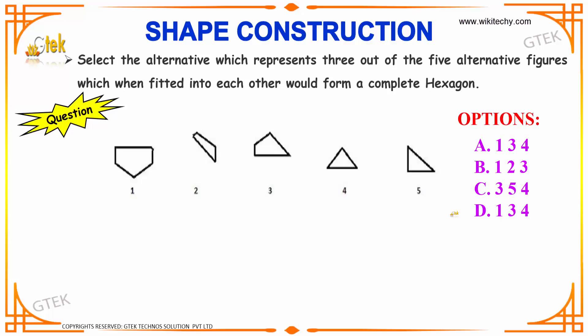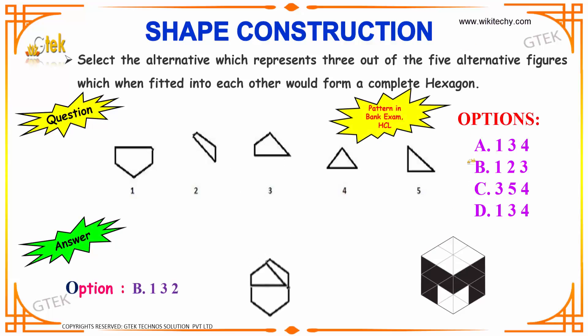Let us check out the answer. Option B: 1, 2, 3. That is, by combining the figures 1, 3, and 2, we can construct a complete hexagon.